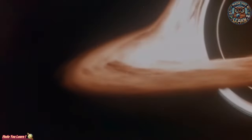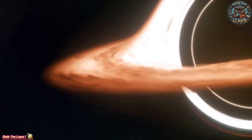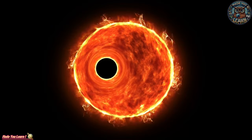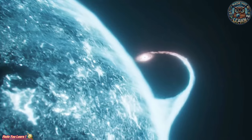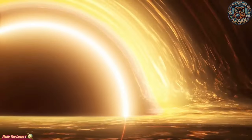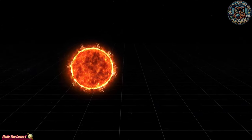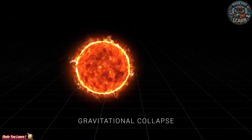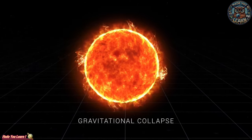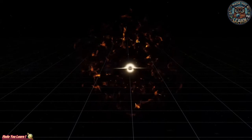At the core of a black hole lies the singularity, a point where matter is thought to be infinitely dense and the laws of physics as we know them cease to operate. Surrounding the singularity is the event horizon, the boundary beyond which nothing can return. The event horizon marks the point of no return and is what defines the size of the black hole. The size of the event horizon varies with the mass of the black hole. The more massive the black hole, the larger the event horizon.